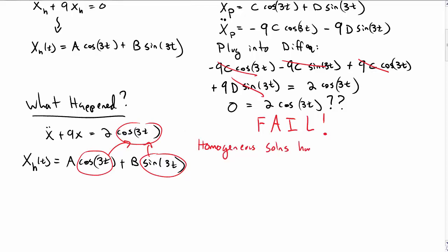When you've got these homogeneous solutions, it doesn't have to be cosine or sines, but they have the same form as the inhomogeneous term, then there's a problem. Then this method is going to fail.